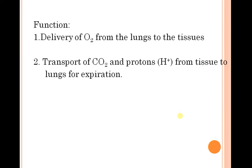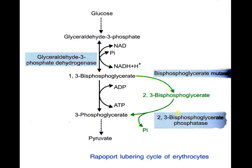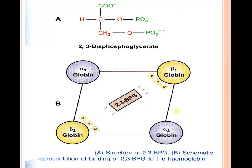What are the functions of hemoglobin? It delivers oxygen from the lungs to the tissues. It also transports carbon dioxide and protons from the tissues to the lungs during expiration. Another important aspect is the effect of 2,3-BPG on the oxygen affinity of hemoglobin, involving the Rapoport-Luebering cycle as a major mechanism.